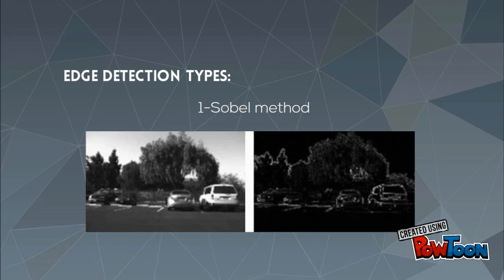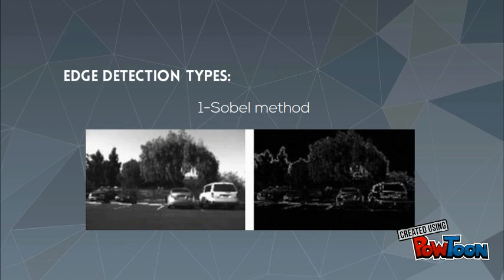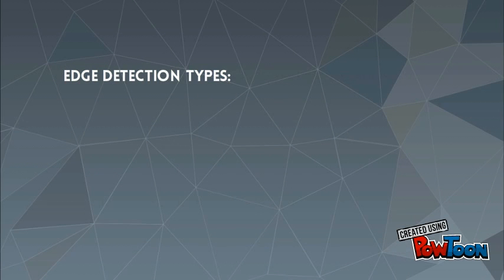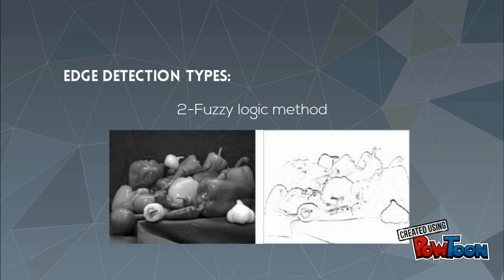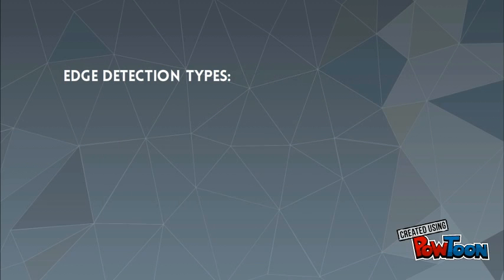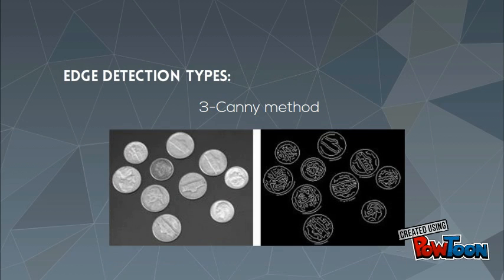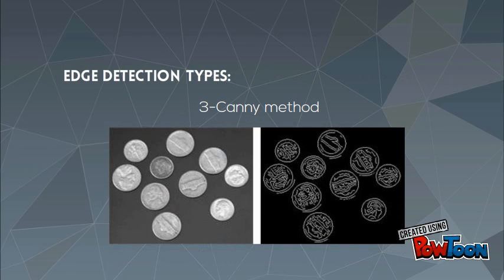There are three edge detection types. The first one is the Sobel method, as shown in figure 1. The second one is the fuzzy logic method, as shown in figure 2. And the third is the Canny method, as shown in figure 3.